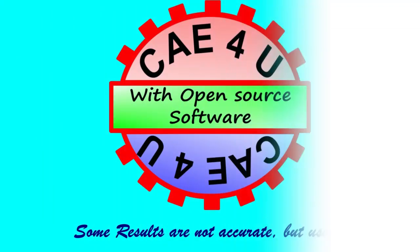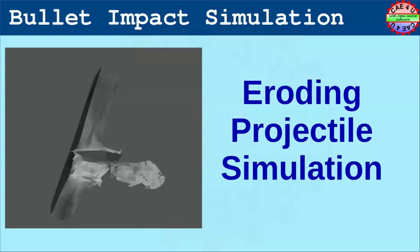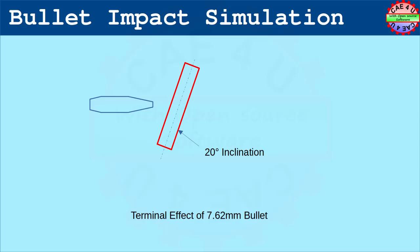Hello viewers, welcome to CAE4U. In this video we will see our analysis of an eroding projectile due to its impact with a plate at an inclined angle. To assess the effect of the inclination and check how well the numerical simulation captures the actual physics, the simulation was carried out for three different inclination angles.